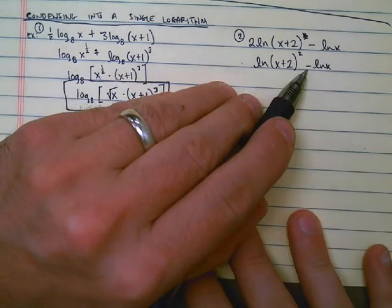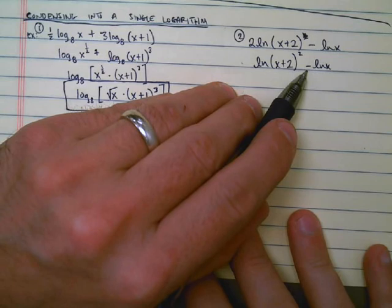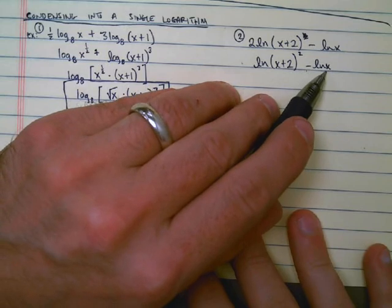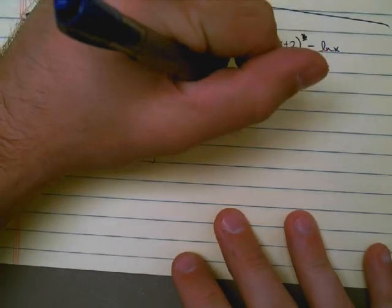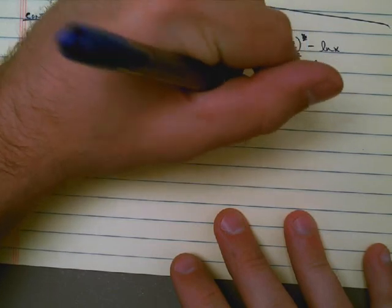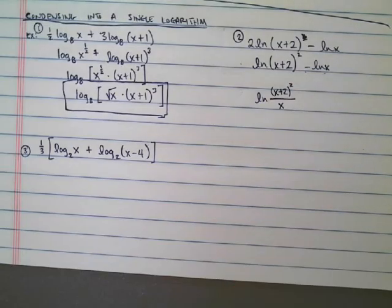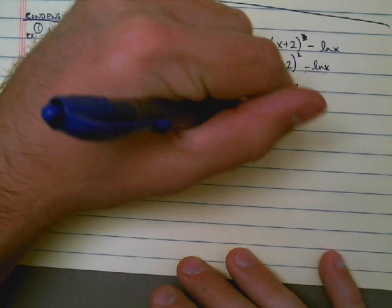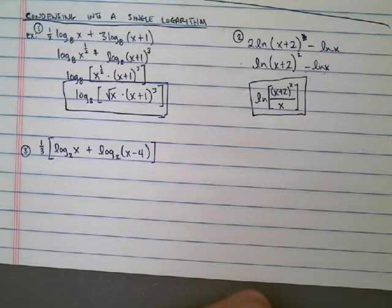Because I see a subtraction sign here, I know from the quotient rule that I can rewrite this as a single logarithm, and there's going to be a fraction, and the x is going to go on the bottom of the fraction. So I can rewrite this as the natural log of (x+2) squared all over x. And I'm done. That's it. If I want to put square brackets around this, you can. It doesn't really matter. It means the same thing.